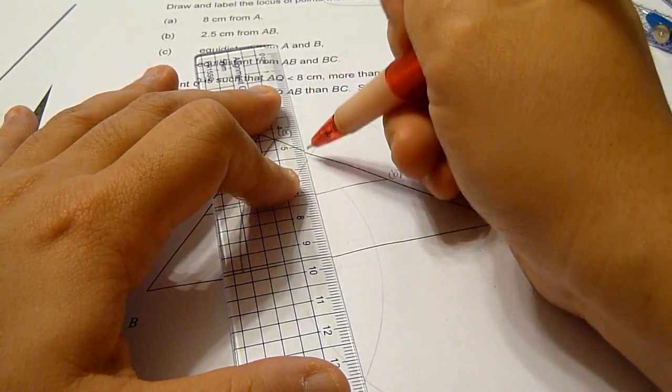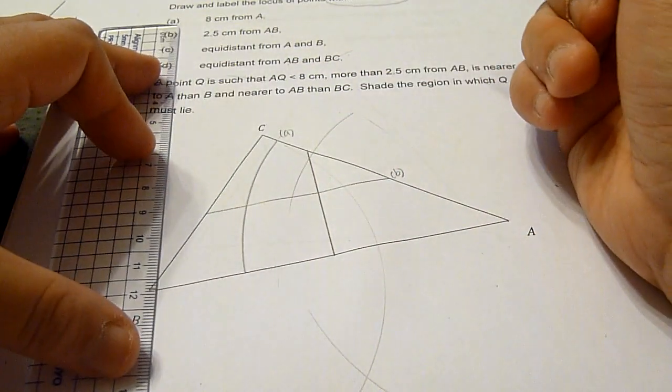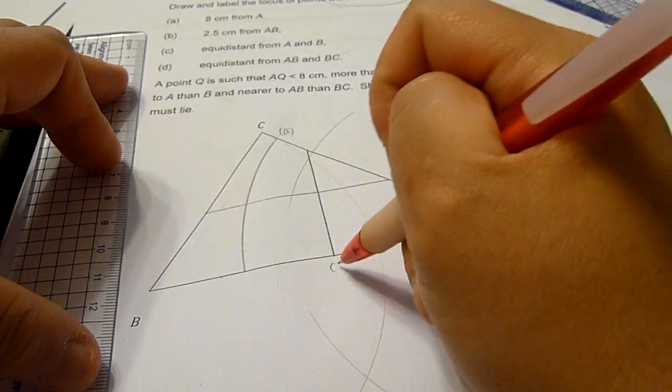However, we shall draw the line, construct the line within the triangle. This is for part C.